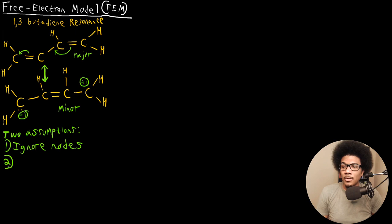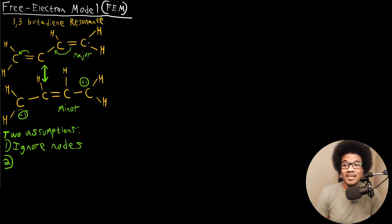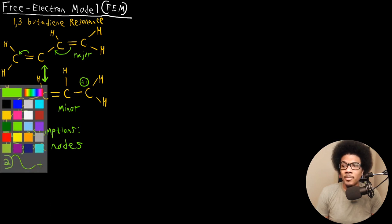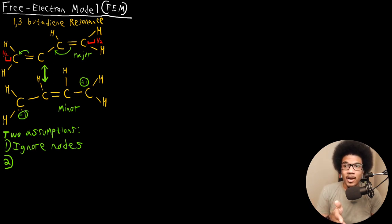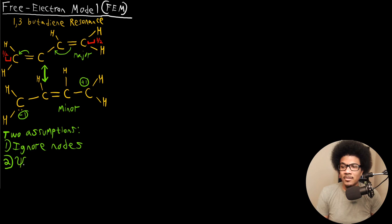The other assumption we're going to make is that the wave function can actually extend past this carbon network. It doesn't just stop at the terminal carbon. In order to account for that, we're going to add another half bond length to each end of our box — one-half bond length added on each side — because the wave function isn't going to abruptly stop just because there's a carbon atom there. These orbitals can extend well past the actual carbon atom, so we add one-half bond length to each side to account for that spillage.